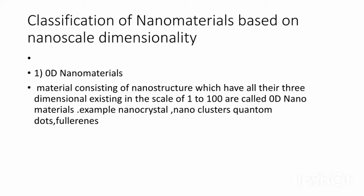The first one is 0D Nanomaterials — nanosystems which are not extended beyond 100 nanometers in any of the dimensions, existing in the nanoscale of 1 to 100 nanometers in all 3 dimensions. For example: nanocrystals, nanoclusters, quantum dots, metal oxide nanopowders, and fullerenes.